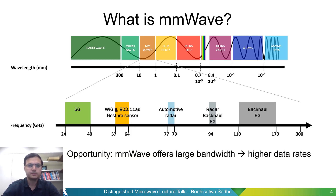What are millimeter waves? Millimeter wave frequencies are frequencies for which the wavelength is between 1 millimeter and 10 millimeters in free space. This corresponds to around 30 GHz to 300 GHz of frequency. In this talk, we mostly focus on 5G where the frequency range is between 24 and 40 GHz. The big advantage of going to millimeter wave frequencies is the availability of much larger bandwidth, which translates to much higher data rates for communications applications.